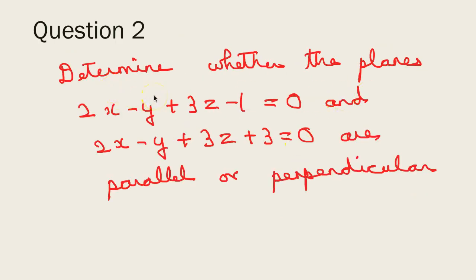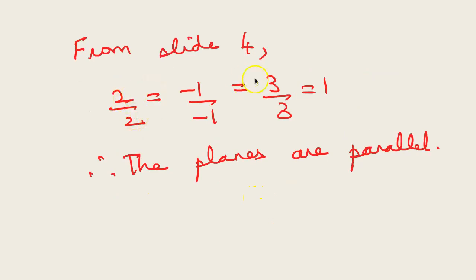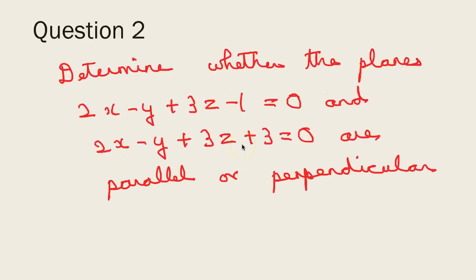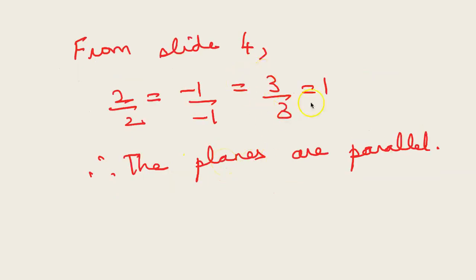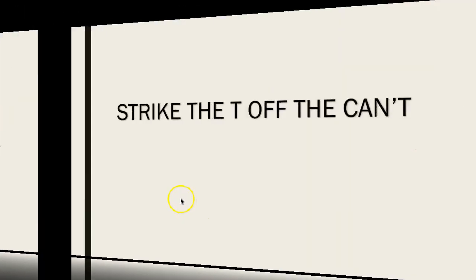Problem 2: Determine whether the planes 2x − y + 3z − 1 = 0 and 2x − y + 3z + 3 = 0 are parallel or perpendicular. The planes are parallel if the coefficients are proportional. The coefficient of x: 2/2 = 1; coefficient of y: −1/−1 = 1; coefficient of z: 3/3 = 1. Since all ratios are equal, the planes are parallel.